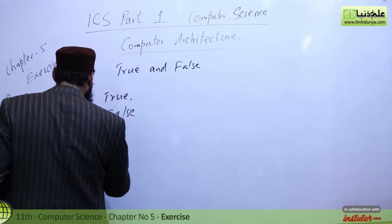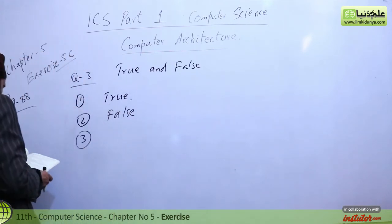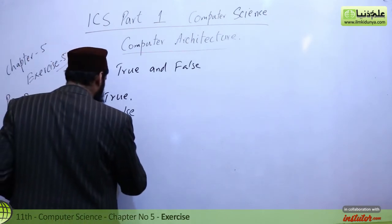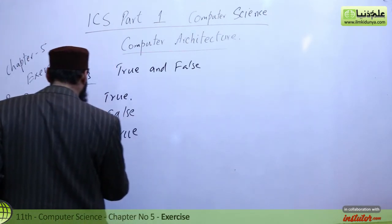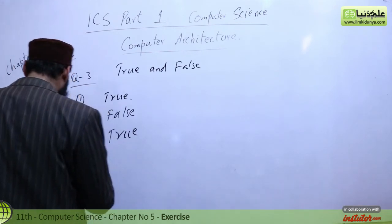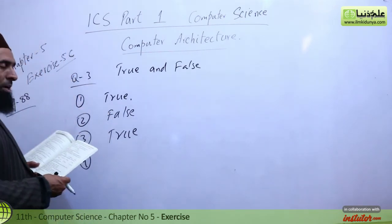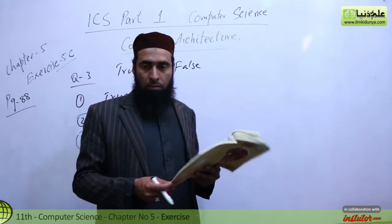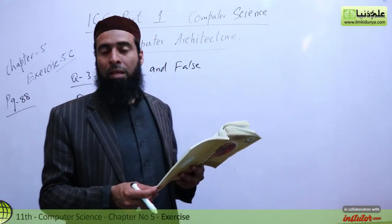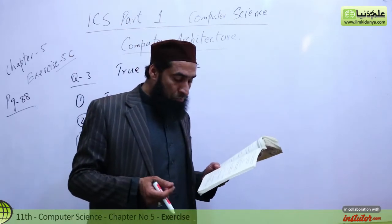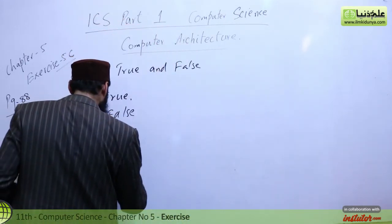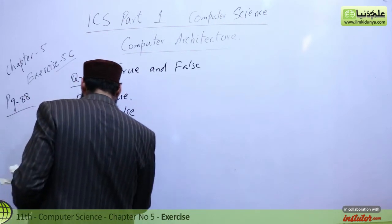Number 3: Random Access Memory is volatile memory — this is TRUE. Number 4: Operating system is an application program — this is FALSE; it is system software, not application software.